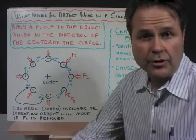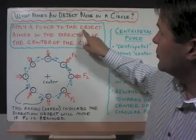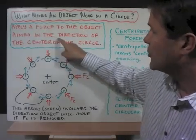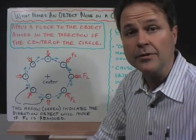What makes an object move in a circle? The answer is simple. Apply a force to the object aimed in the direction of the center of the circle and the object will travel in a circle.